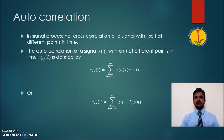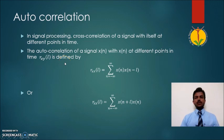Cross-correlation is basically used for the comparison of two different data sequences, but autocorrelation is the process where we are comparing one sequence with itself, and it provides the similarity or the repetition of a signal within its own.